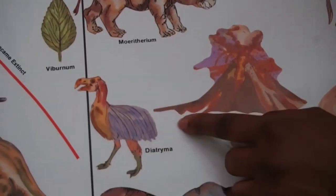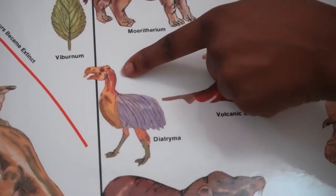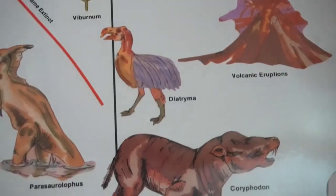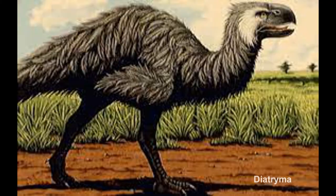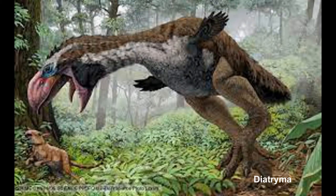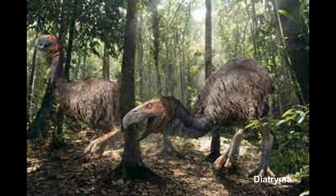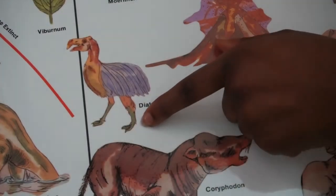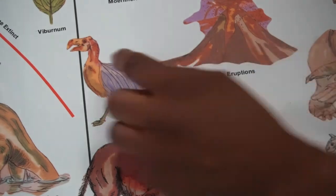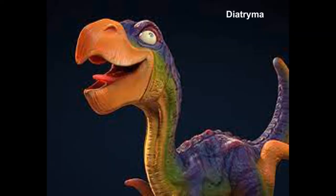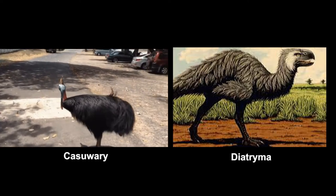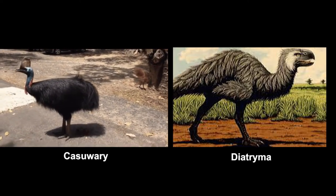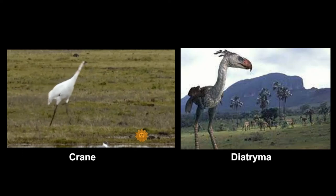One of the first birds of the Tertiary Period was the Diatryma, a giant flightless creature that measured 7 feet in height. Its useless wings were disproportionately small for its huge body, especially since it had no tail. It walked or ran on strong, sturdy legs. Its feet were sizable with three toes in the front and one very tiny toe at the back. A large curved beak enabled it to eat plants or small mammals and reptiles. Diatryma probably had feathers like the modern-day cassowary bird, but it does not resemble any other living bird. It is possible it was a distant relative of the crane.